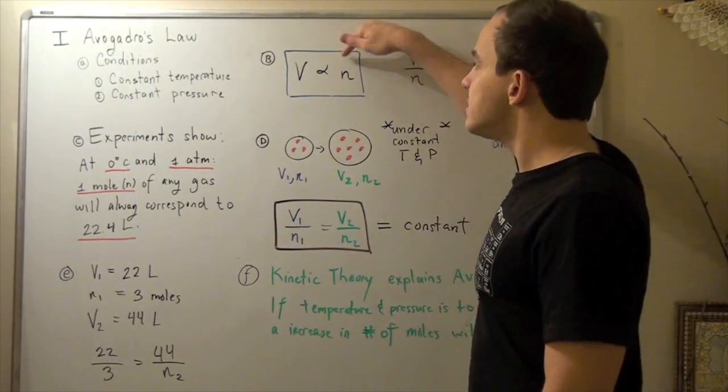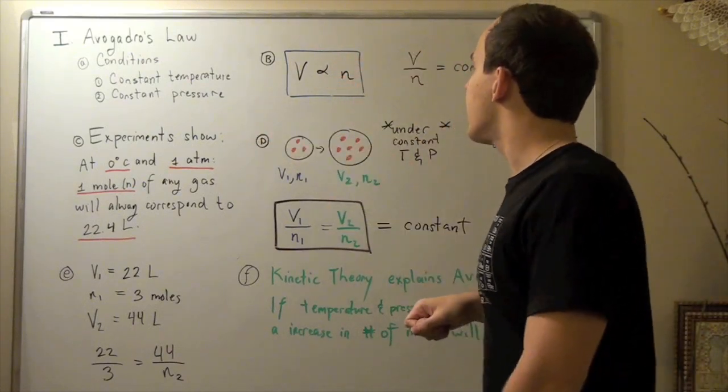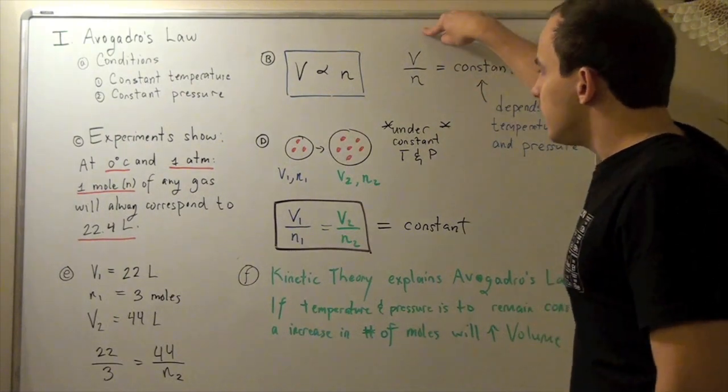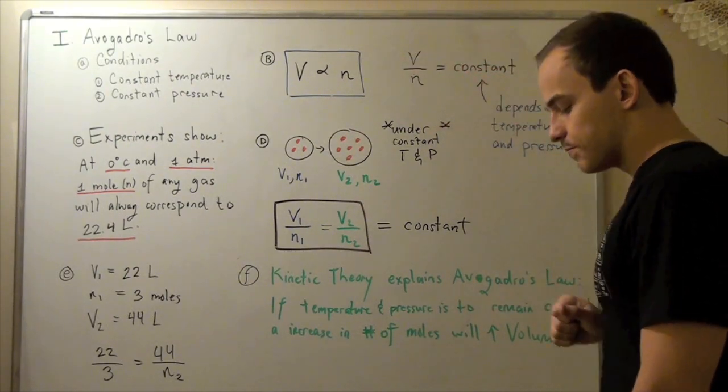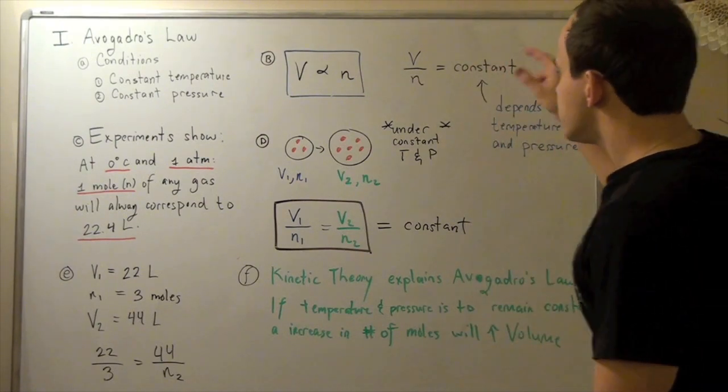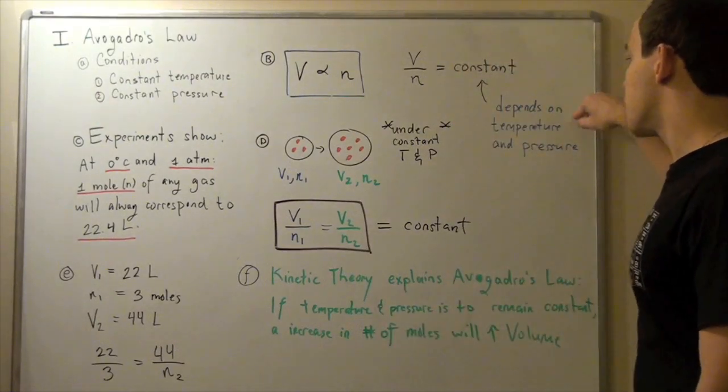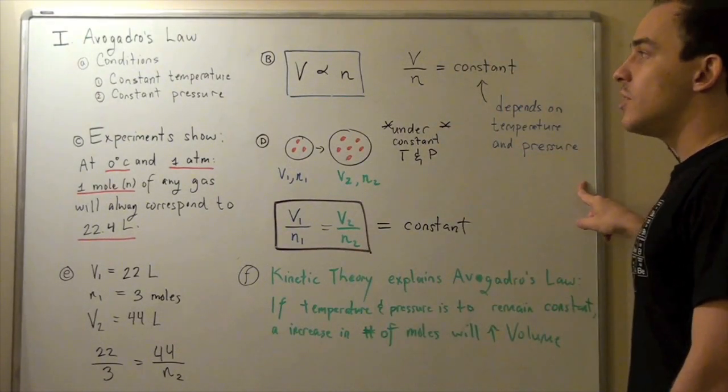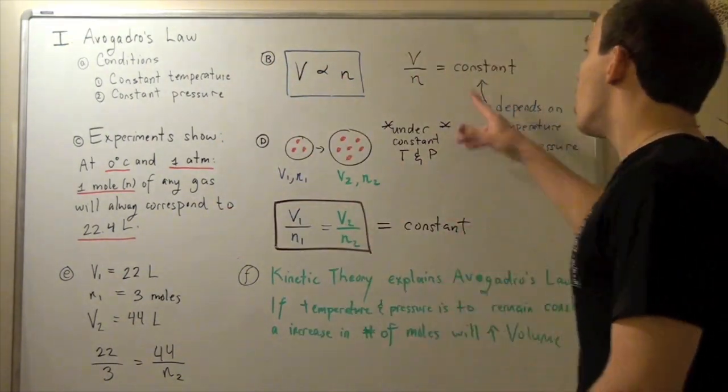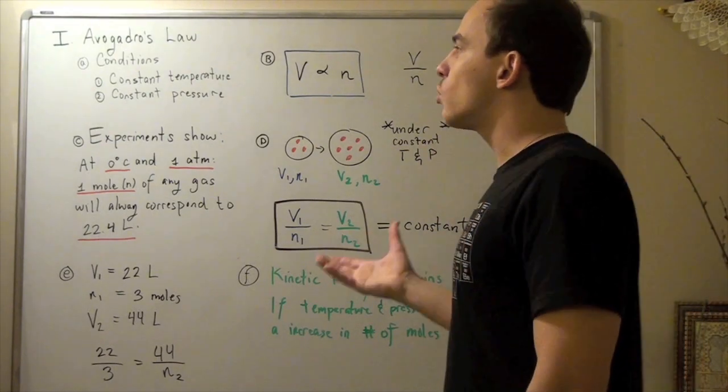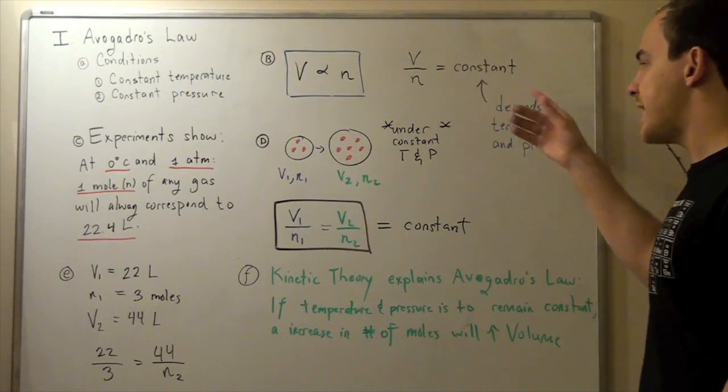Now if we multiply this side by some constant, set it equal, and our n comes to this side, we get the following relation. Volume over n, our number of moles, equals a constant. Now this constant, which we will see next when we learn about the ideal gas law, depends on temperature and pressure. In other words, if our pressure and temperature are the same, then our constant will always be the same. But if we increase or decrease our temperature or pressure, our constant will also change.